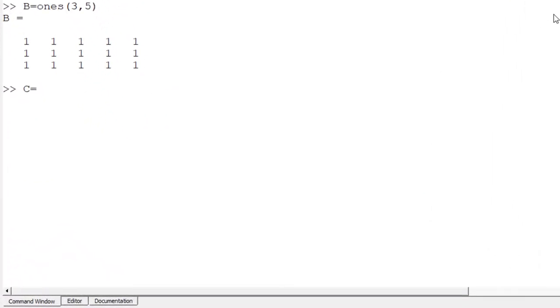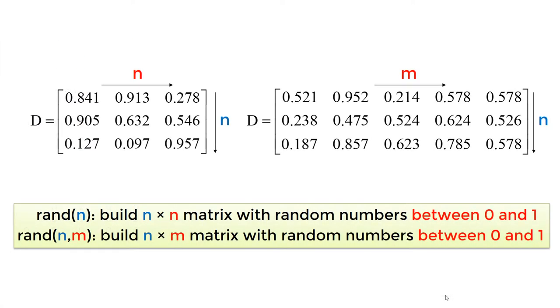For 3 by 3, for 3 by 5, you can use zeros 3, 5. If you want random numbers between 0 and 1 in your matrix as shown in the slide, you can create such matrices using rand n or rand n, m for square or non-square matrix.